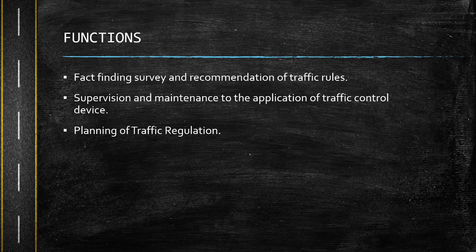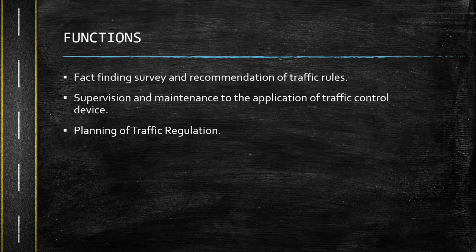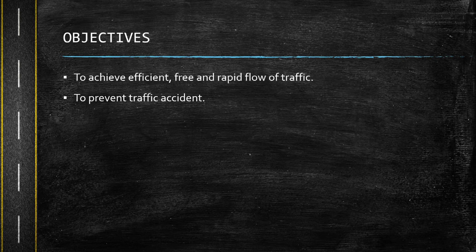What are the functions of traffic engineering? First is fact-finding survey and recommendation of traffic rules. Through their planning and geometric design, they have the power in recommending traffic rules and regulations that may be implemented in that specific area. Second is supervision and maintenance in the application of traffic control devices, and the planning of traffic regulation. The objective of traffic engineering is to achieve efficient, free, and rapid flow of traffic, and of course, to prevent traffic accidents.